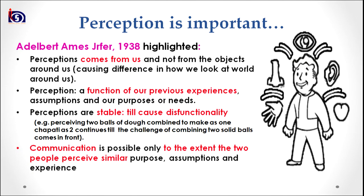For example, a child who perceives that his or her mother is making a single roti with two balls of dough will take the single chapati as two. However, when it comes to joining the two solid balls, his perception is called into question and he is required to change it. The fourth thing Zerper proposed is that communication is possible only to the extent that two people perceive similar purpose, assumption, and experiences.